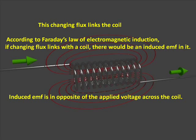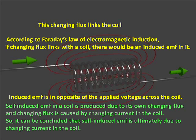Hence, the induced EMF is in opposite of the applied voltage across the coil. Hence, self induced EMF in a coil is produced due to its own changing flux and changing flux is caused by changing current in the coil. So, it can be concluded that self induced EMF is ultimately due to changing current in the coil.